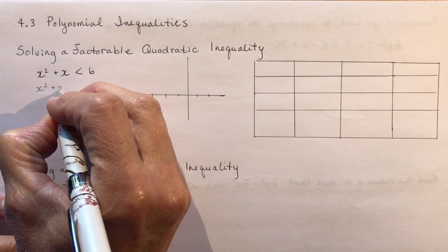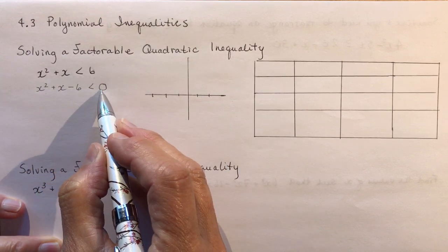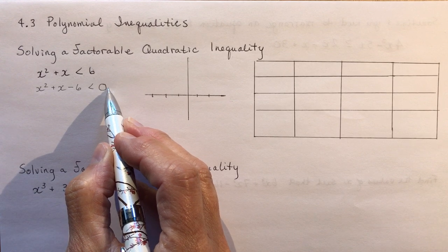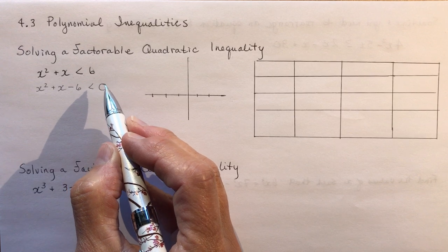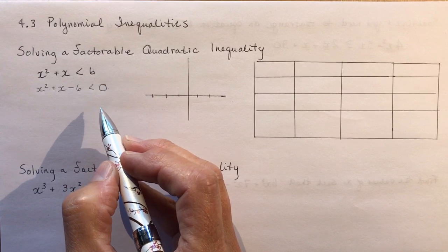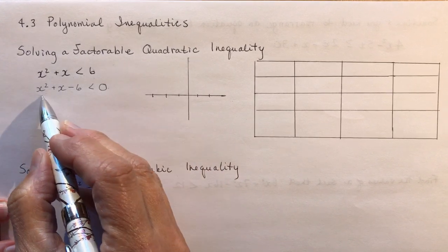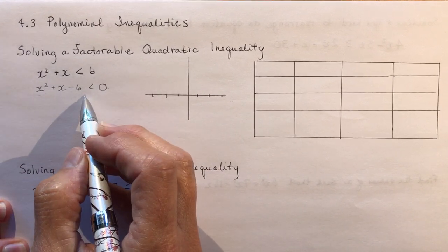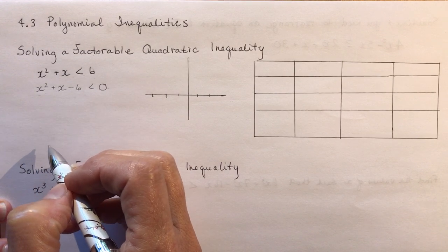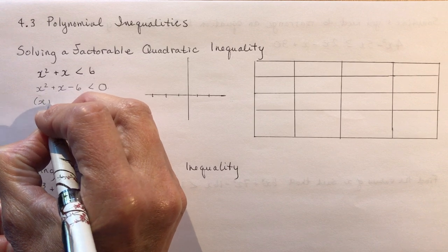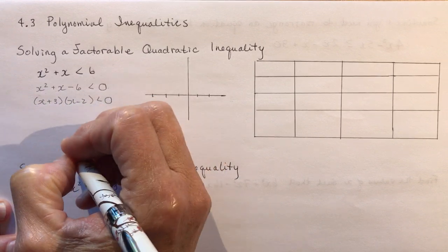Subtract to get everything on one side — I want to know where this equation is less than zero. I'm going to show you two techniques: one is the way the textbook likes to do it, the other is the way I think you should do it because it's ten times easier. Let's factor: multiplies to negative 6 and adds to positive 1, so that's plus 3 and minus 2. So I have (x + 3)(x − 2) < 0.